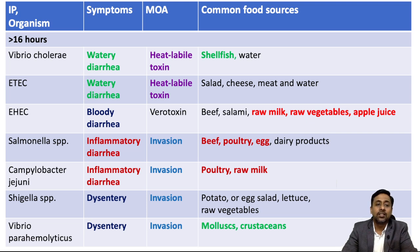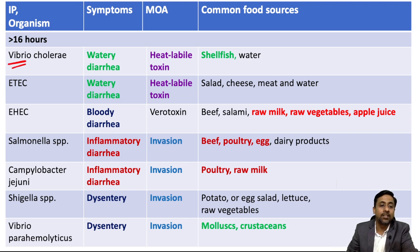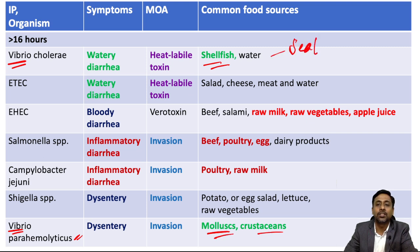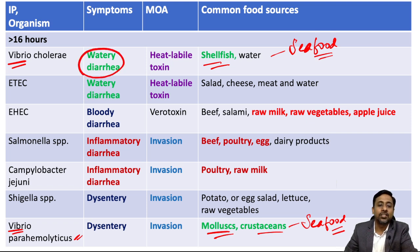For the incubation period of more than 16 hours, there is a large list of agents. Two Vibrio species: Vibrio cholerae and Vibrio parahaemolyticus. The food source responsible for both is seafood. If seafood is mentioned in the question, the answer is likely Vibrio. Then check the symptom: if watery diarrhea, it is Vibrio cholerae via heat-labile cholera toxin; if dysentery, it is Vibrio parahaemolyticus which acts by invasion without producing a toxin.